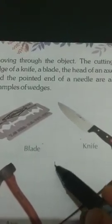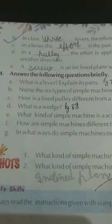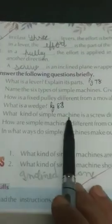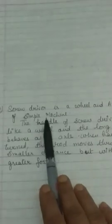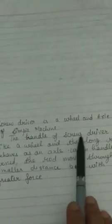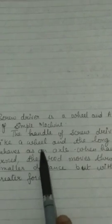Part E: What kind of simple machine is a screwdriver? Explain. A screwdriver is a wheel and axle kind of simple machine. The handle of the screwdriver behaves like a wheel and the long rod behaves as an axle. When the handle is turned, the rod moves through a smaller distance but with greater force.